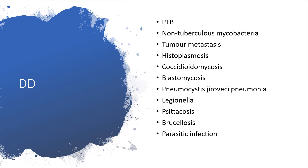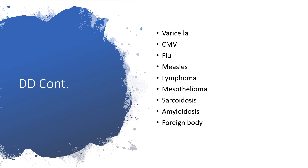Possible differential diagnoses include pulmonary tuberculosis, non-tuberculous mycobacteria, tumor metastasis to affected organs with millet-like appearance, and histoplasmosis due to mycosis. Other conditions include blastomycosis, Pneumocystis jirovecii pneumonia in HIV-positive patients, Legionella, histoplasmosis, brucellosis, and parasitic infections. Also consider varicella, cytomegalovirus, measles, lymphoma, mesothelioma, sarcoidosis, amyloidosis, and foreign body.